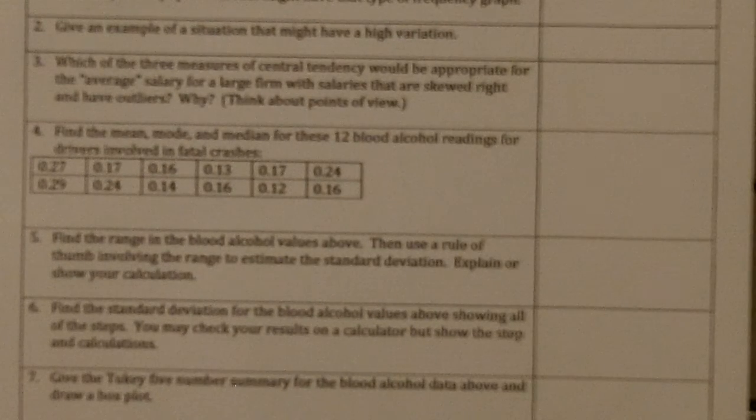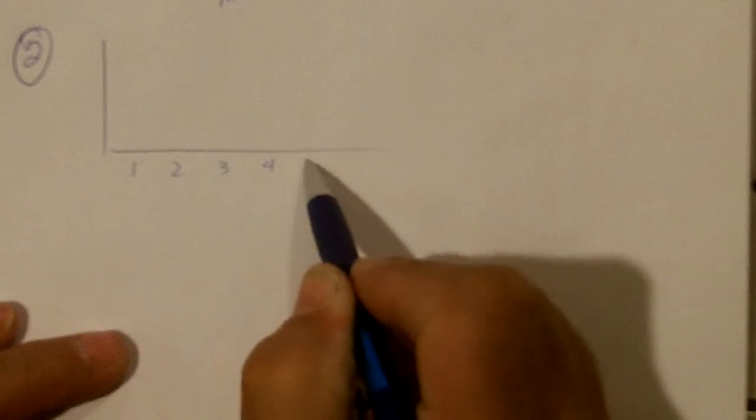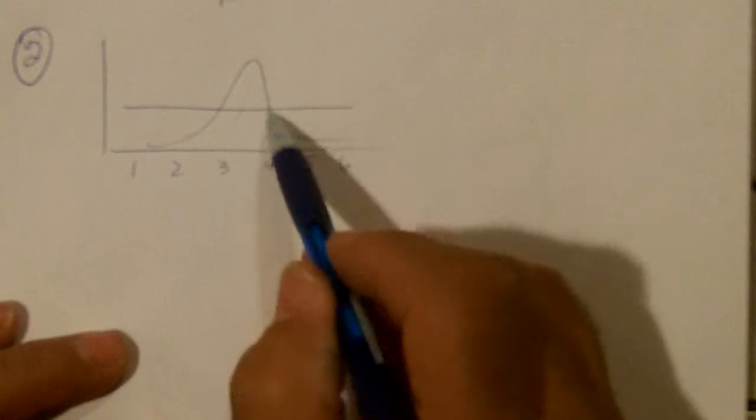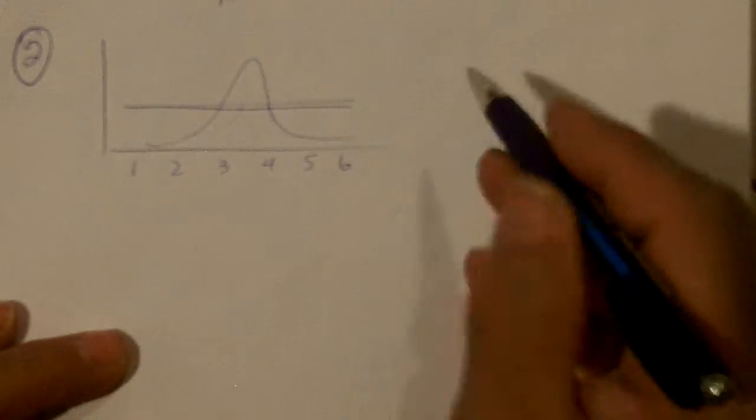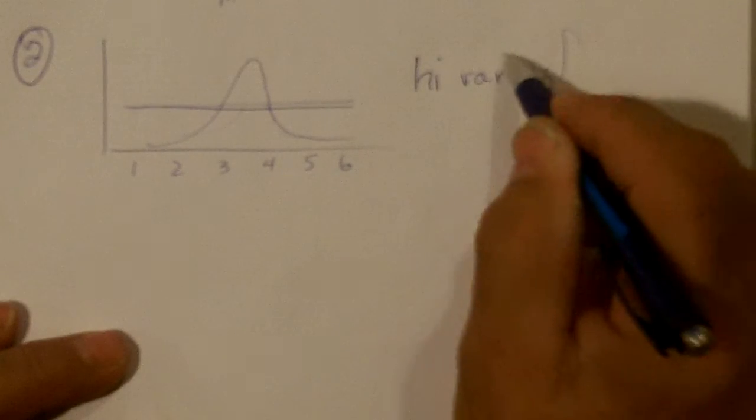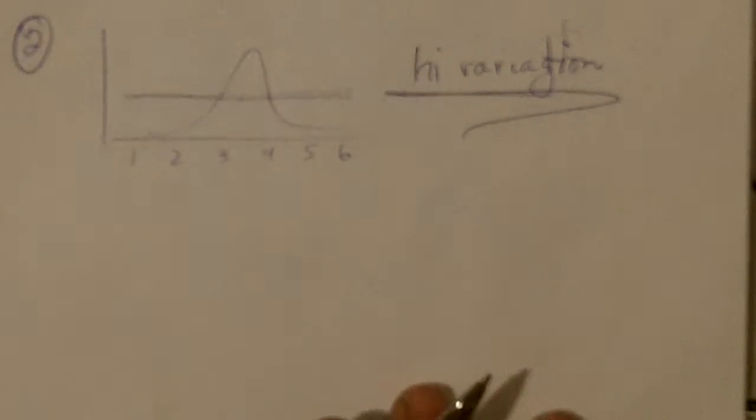Number two says give an example of a situation that might have a high variation. One that we talked about in the class was rolling a die, then the likelihood of getting a one or two or three or four or five or six is going to be pretty equal, and so there's going to be a lot of variation. It's pretty even all the way across, so this would be a high variation. So that's number two.